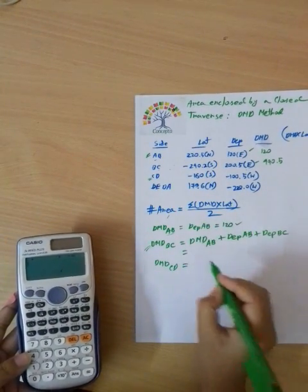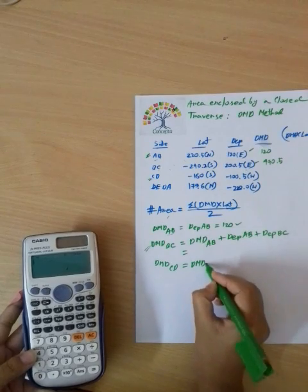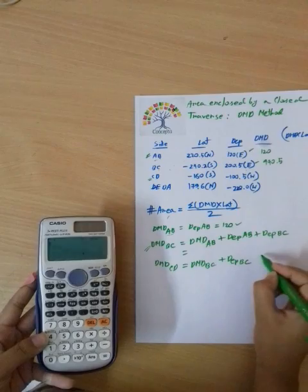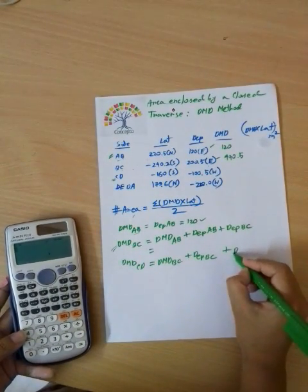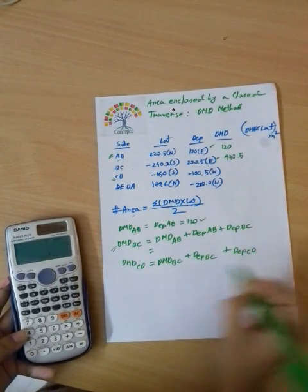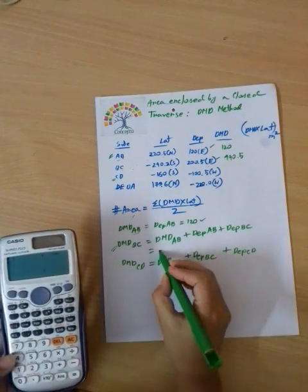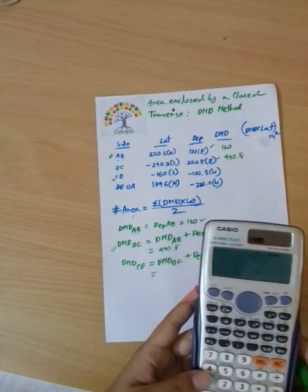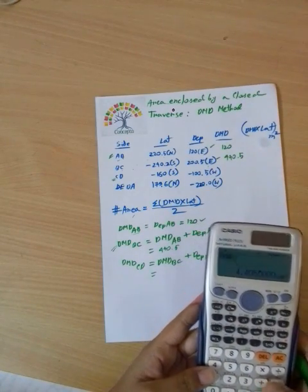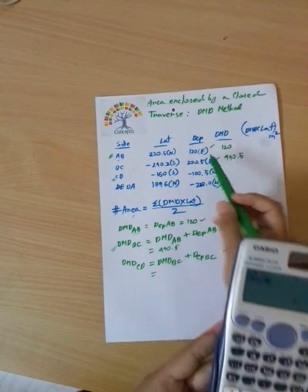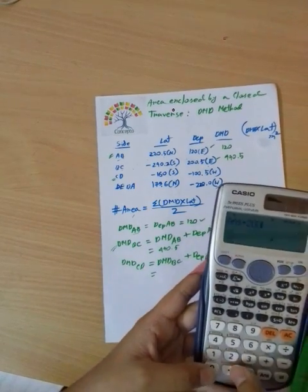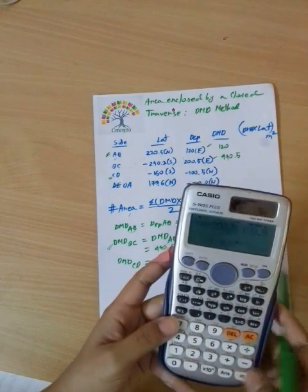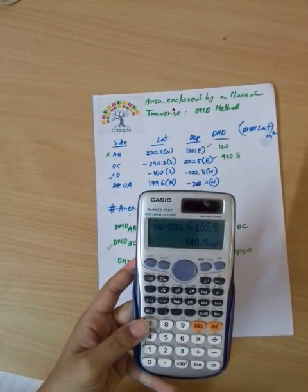For DMD of BC, we apply: DMD of BC equals DMD of AB plus departure of BC. DMD of BC is 440.5, plus departure of BC 200.5, plus departure of CD minus 100.5, giving a result of 540.5.